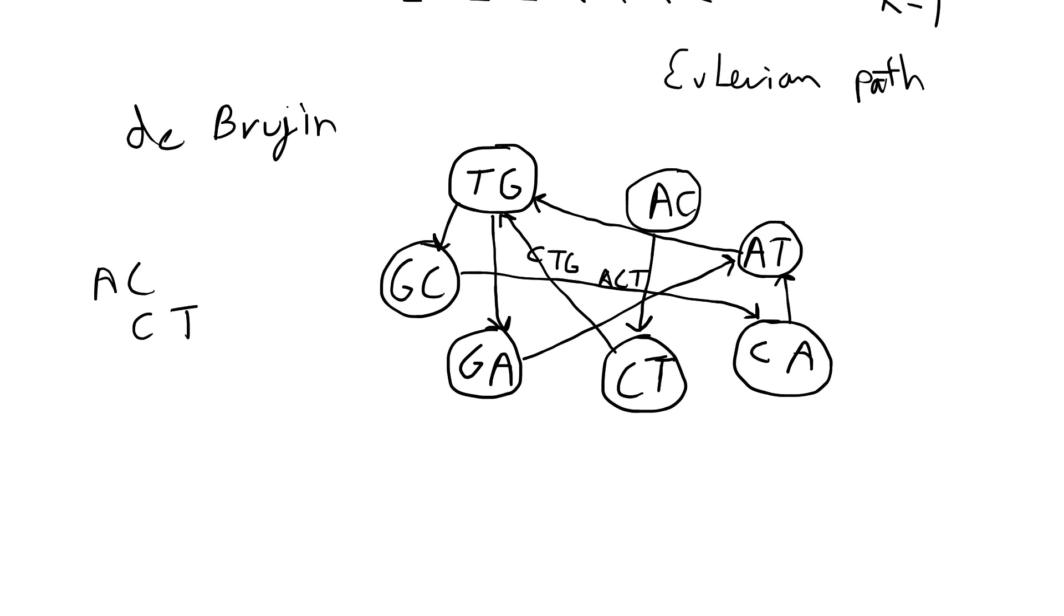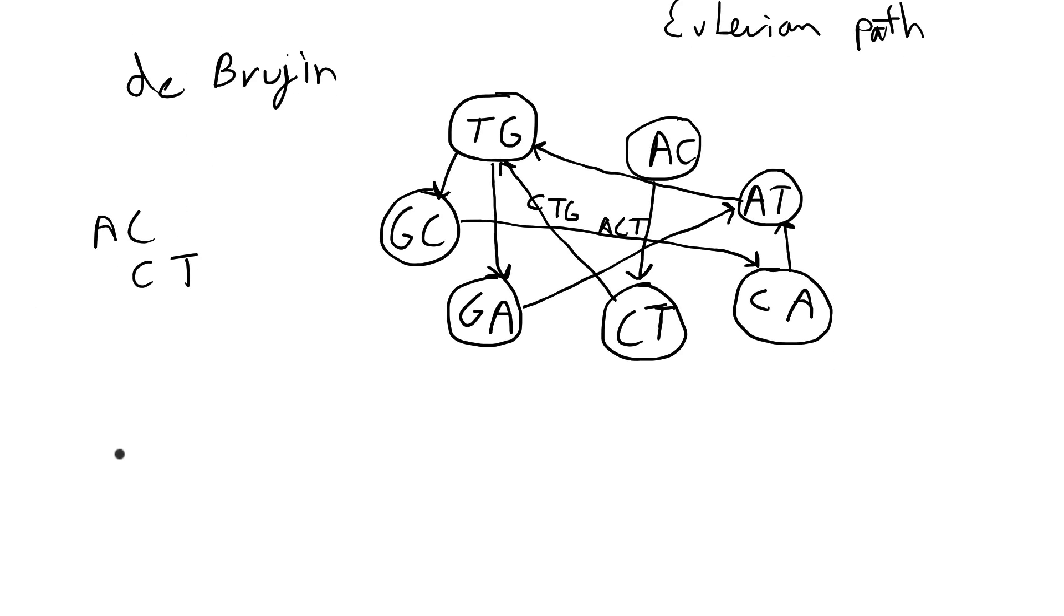So using this diagram and the directed edges, the original DNA sequence S is going to be starting at AC because there are no edges that point to AC. So that's going to be our starting node. The first value is going to be AC.